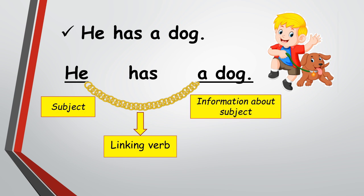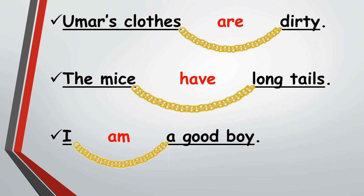'He has a dog.' In this sentence, he is the subject, 'has' is the linking verb, and 'a dog' is the information about the subject. Linking verbs show what someone or something is or has — look at the example: he has a dog.